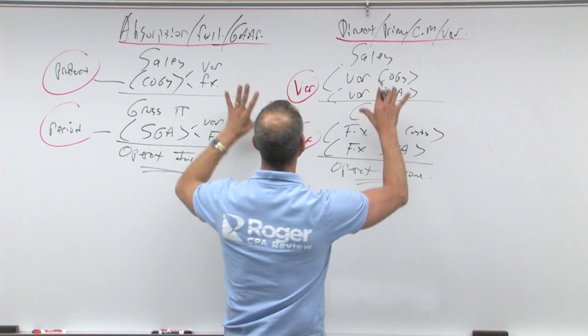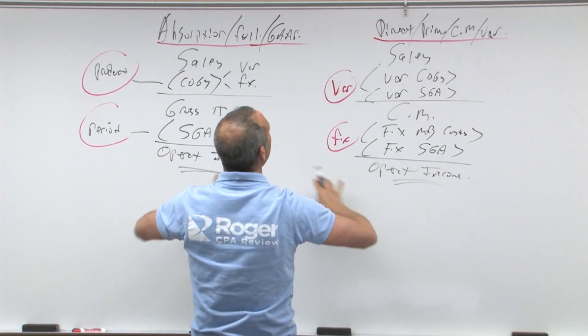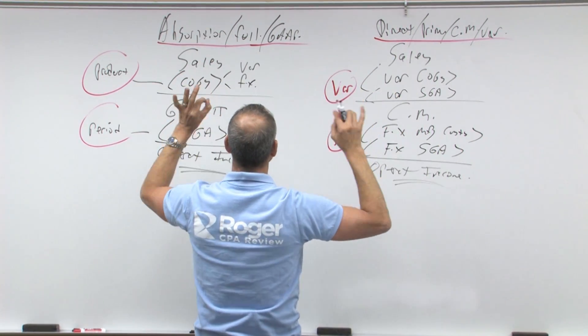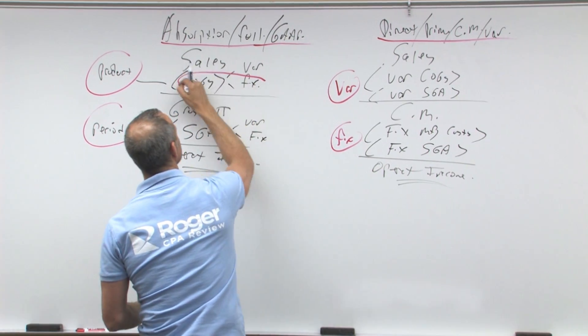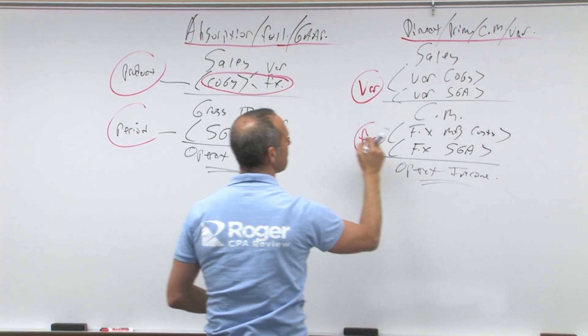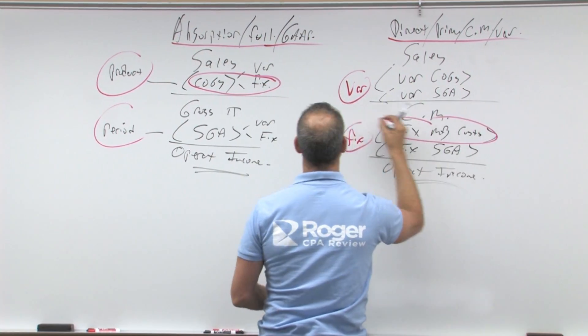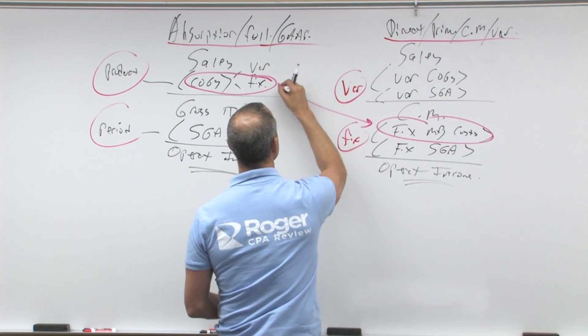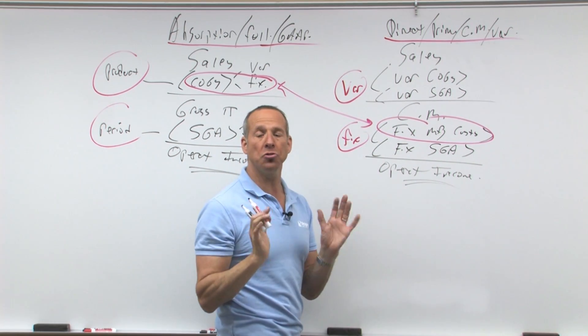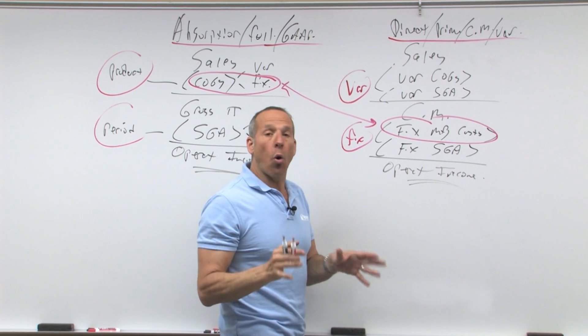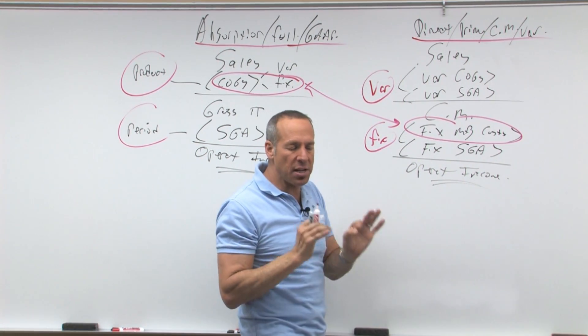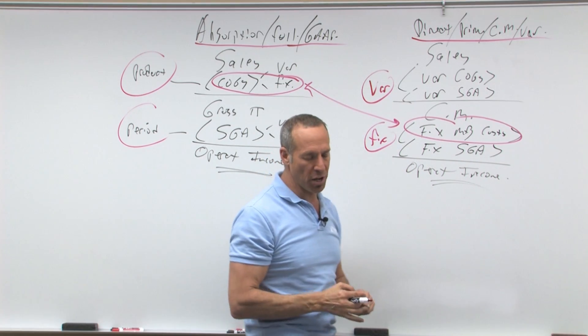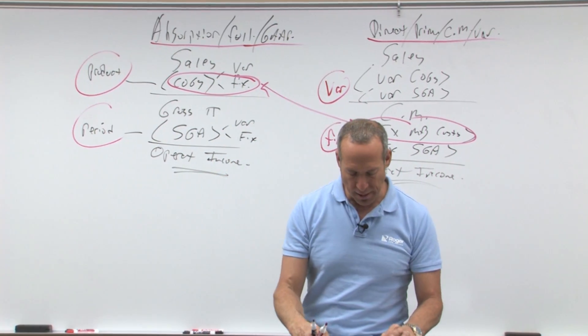Now, when you look at these two formulas, the numbers are all going to be the same except two important numbers. Fixed costs of goods sold and fixed manufacturing costs. These two numbers are going to be different. Everything else will be the same. It's just the difference between these two numbers. So that's what's really going to be the difference.